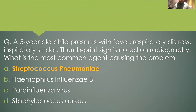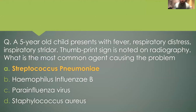A five-year-old child presents with fever, respiratory distress, inspiratory stridor, and the thumb print sign noted on radiography — what is the most common causative agent? You should have learned in ENT as well that this is a diagnosis of acute epiglottitis. There is a controversy, but according to the latest journals, Haemophilus influenzae is not as common anymore and Streptococcus pneumoniae has taken over as the most common causative agent.